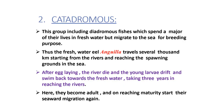Now, the catadromous group includes diadromous fishes which spend a major part of their lives in fresh water but migrate to the sea for breeding purposes. The freshwater eel, Anguilla, travels several thousand kilometres starting from the rivers and reaching the spawning grounds in the sea. After egg-laying, the adults die and the young larvae drift and swim back towards fresh water, taking three years to reach the rivers.